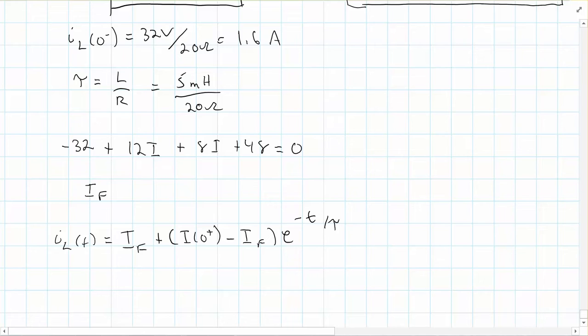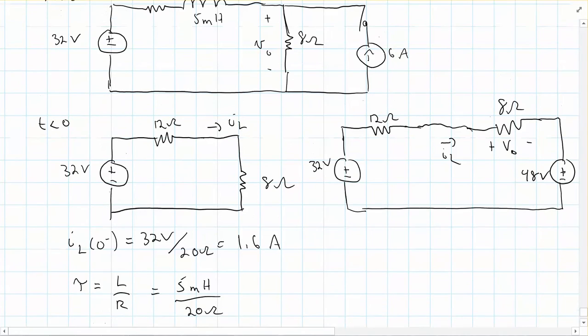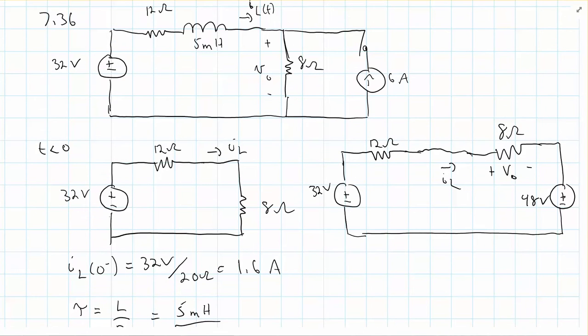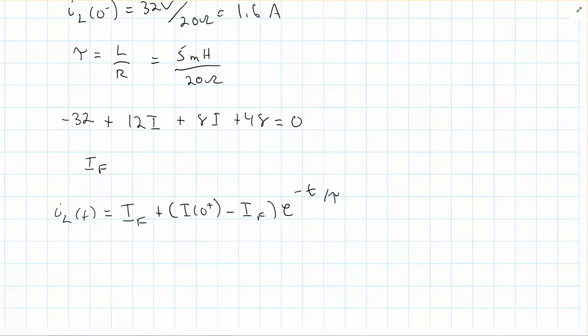But then the remaining things you have to do is you also have to find this voltage Vout. When you're in this circuit here, you're looking for Vout here. But wait a minute. The current now is just the current going through that 8 ohm resistor. So Vout is simply going to be IL at t times 8 ohms. And that's it.